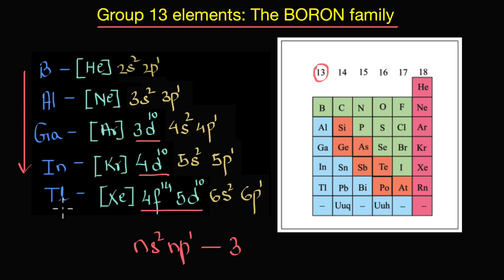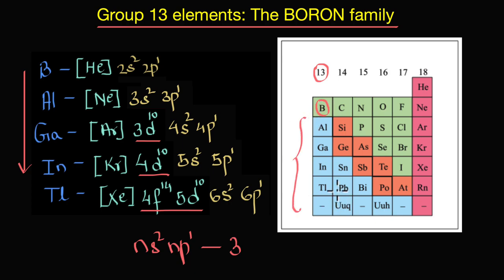From the diagram here, the green elements are non-metals, the blue ones are metals, and the orange ones are metalloids. So except boron, every other member of group 13 is a metal. There are some controversies around boron — many people tend to look at boron as a metalloid.